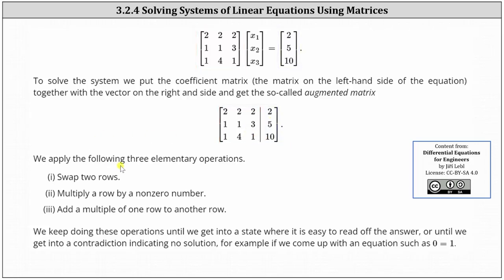Now we apply the following three elementary operations to determine the solution. Number one, we swap two rows. Number two, we multiply a row by a non-zero number. Number three, we add a multiple of one row to another row.